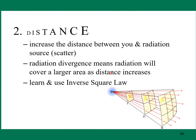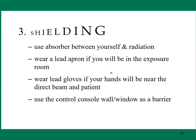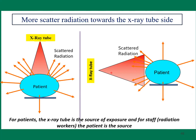Shielding: use an absorber between yourself and the radiation source. Wear a lead apron if you will be in the exposure room. Wear lead gloves if your hands will be near the beam. Avoid direct beam. Use the control console wall window. Note that more scatter radiation comes from the X-ray tube side. This is a guideline for those working in the radiology area.